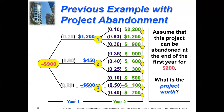Going back to our previous example, assume this project can be abandoned at the end of the first year for $200. What is the project worth? If this project — referencing the previous decision tree — has an option exercisable at one year, you could receive $200 by selling. That means you have the option to sell the project for $200.